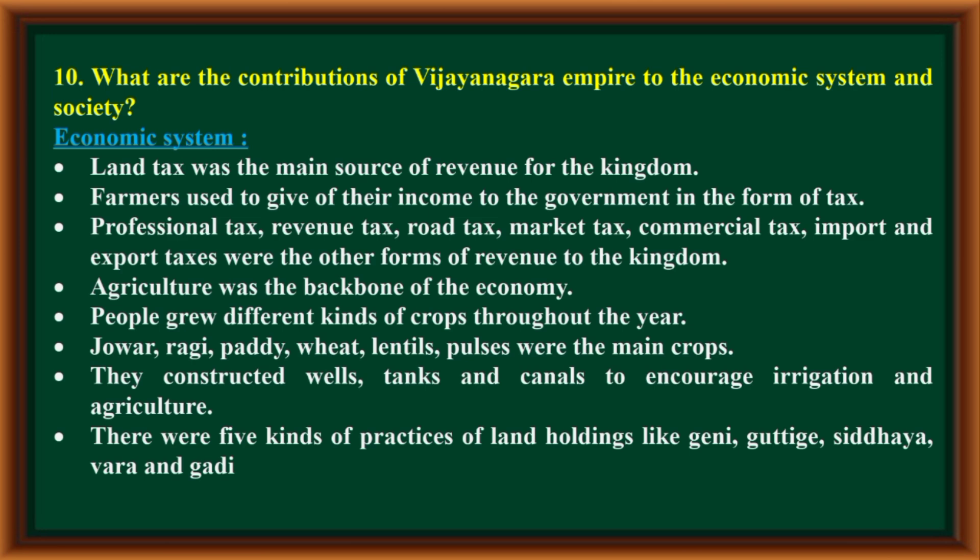Agriculture was the backbone of the economy. People grew different kinds of crops throughout the year. Jowar, Raghi, Paddy, Wheat, Lentils, and Pulses were the main crops. They constructed wells, tanks, and canals to encourage irrigation and agriculture. There were five kinds of land holding practices: Gheni, Guttige, Siddhaya, Vara, and Gadi.